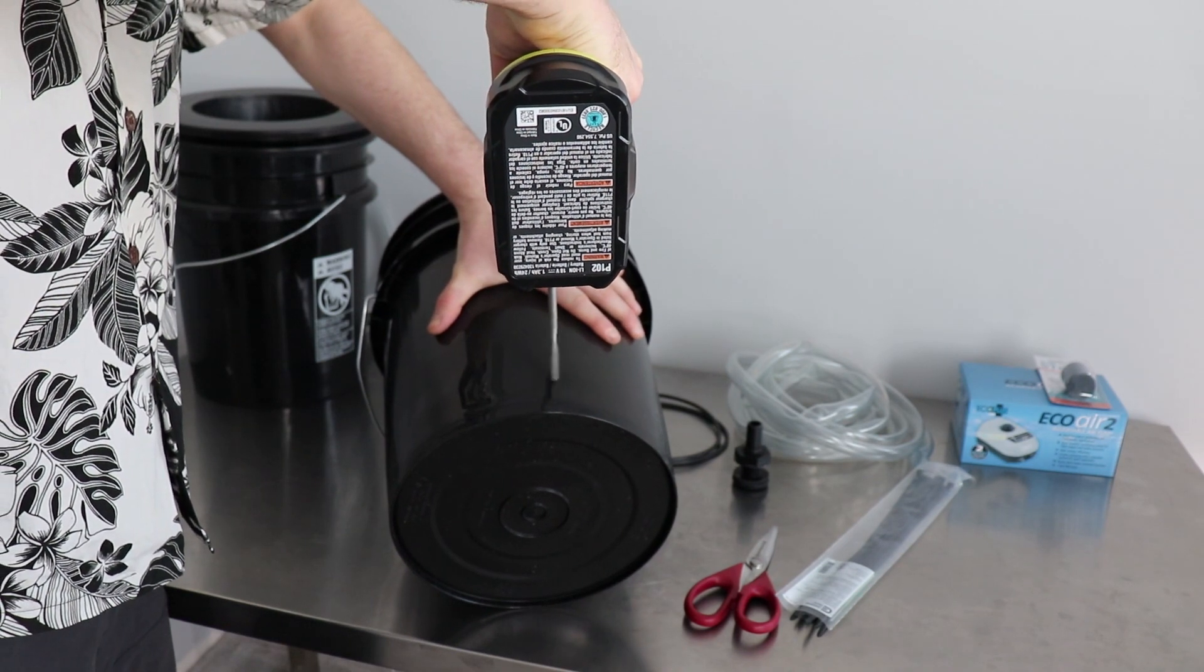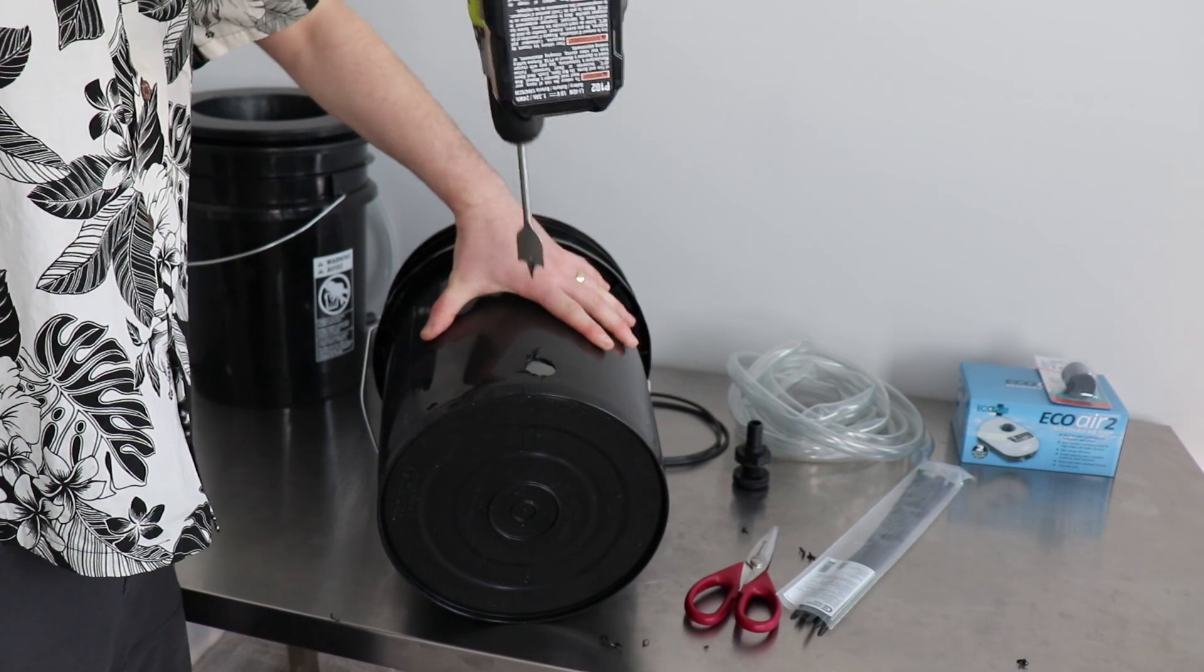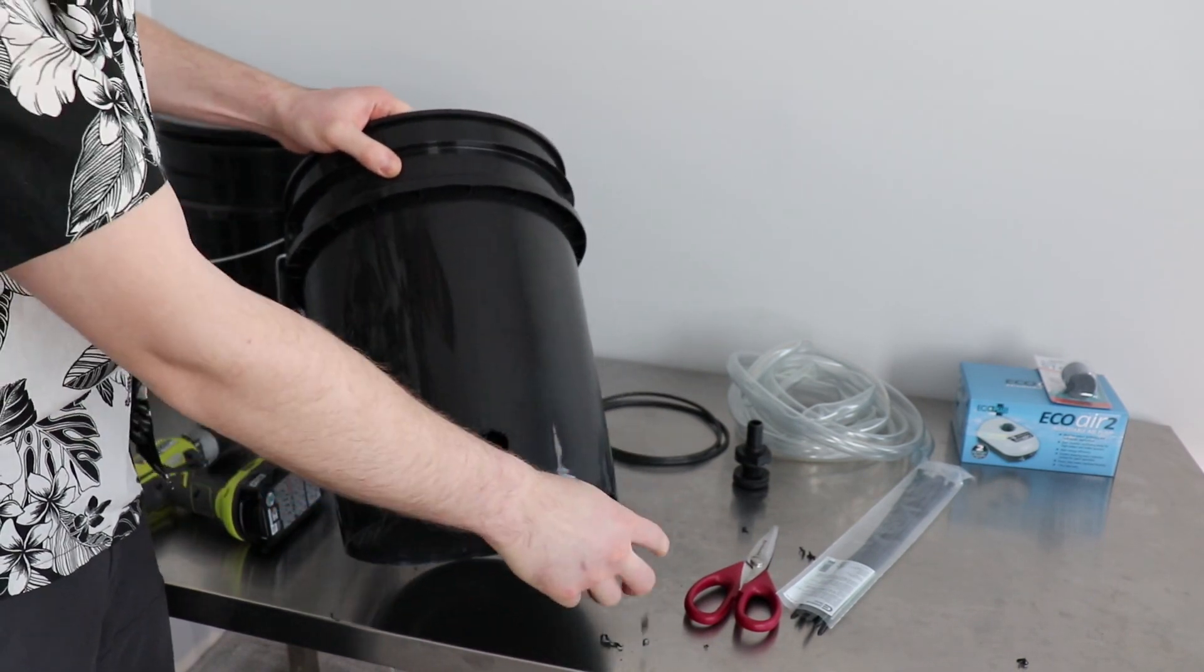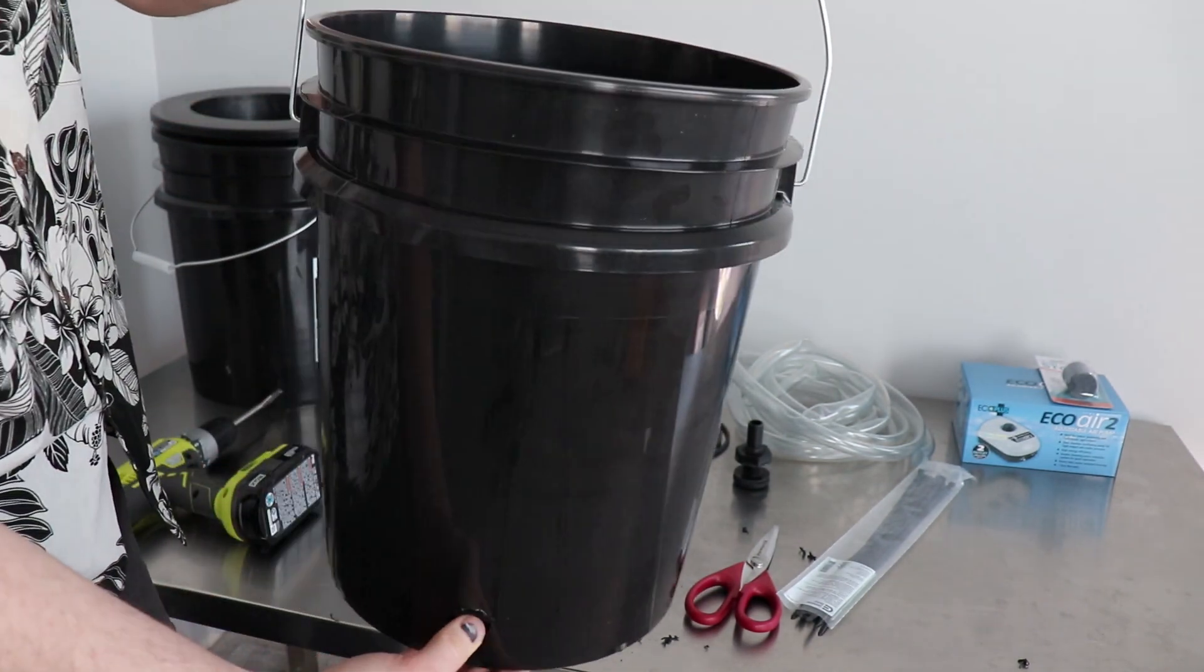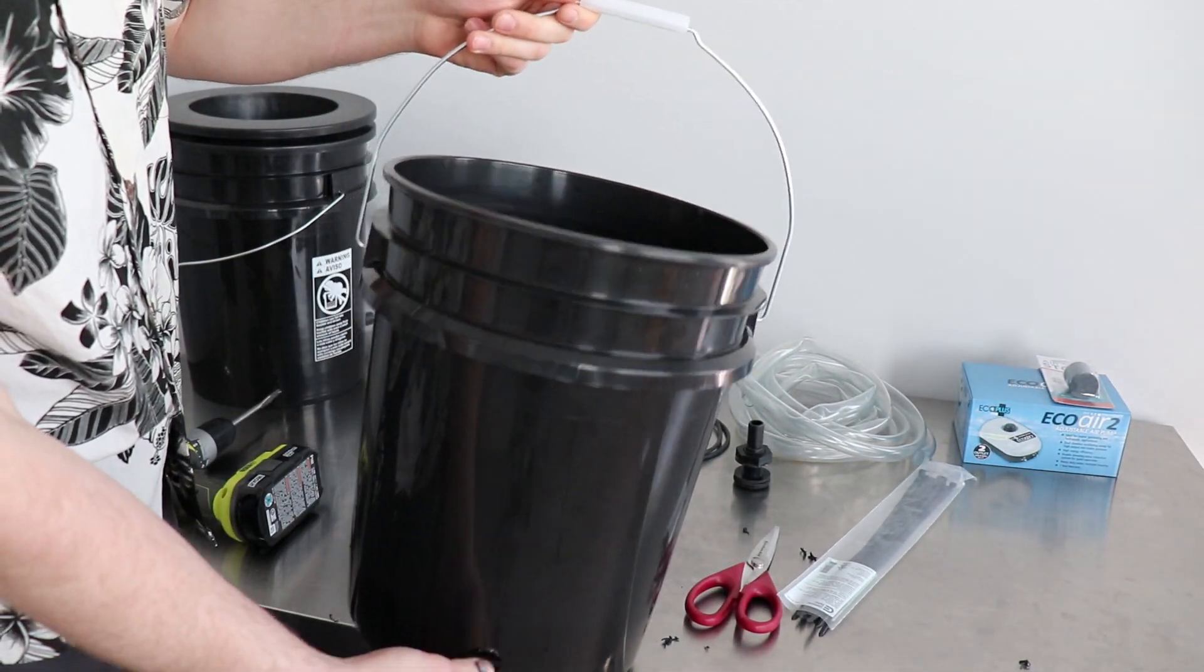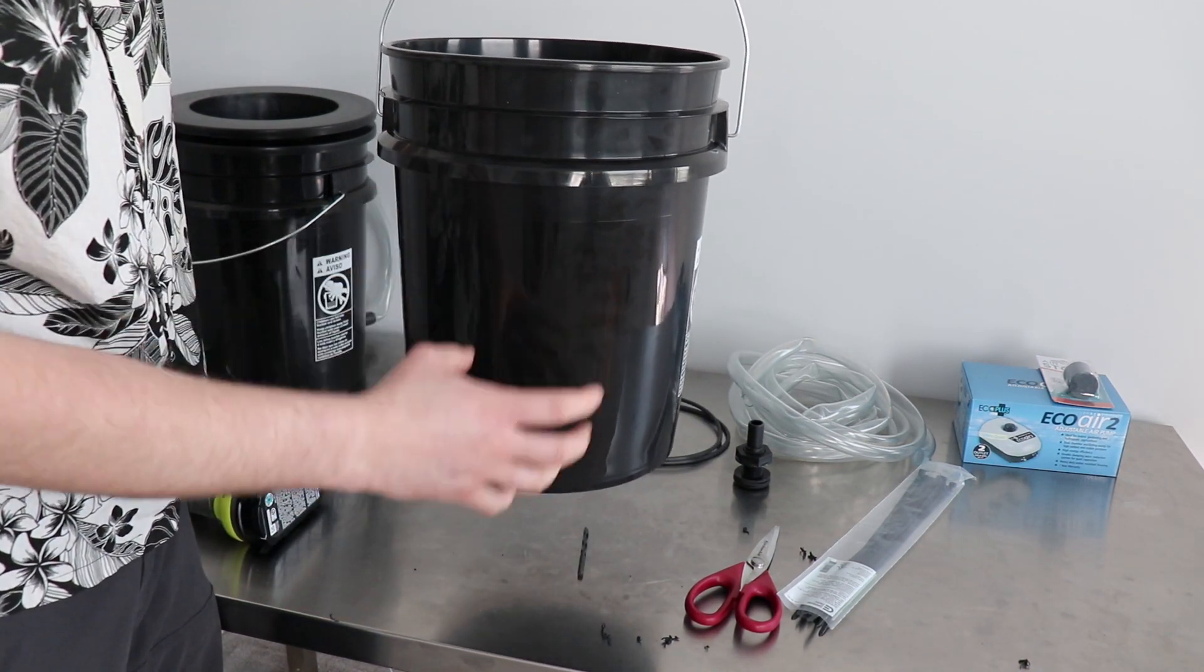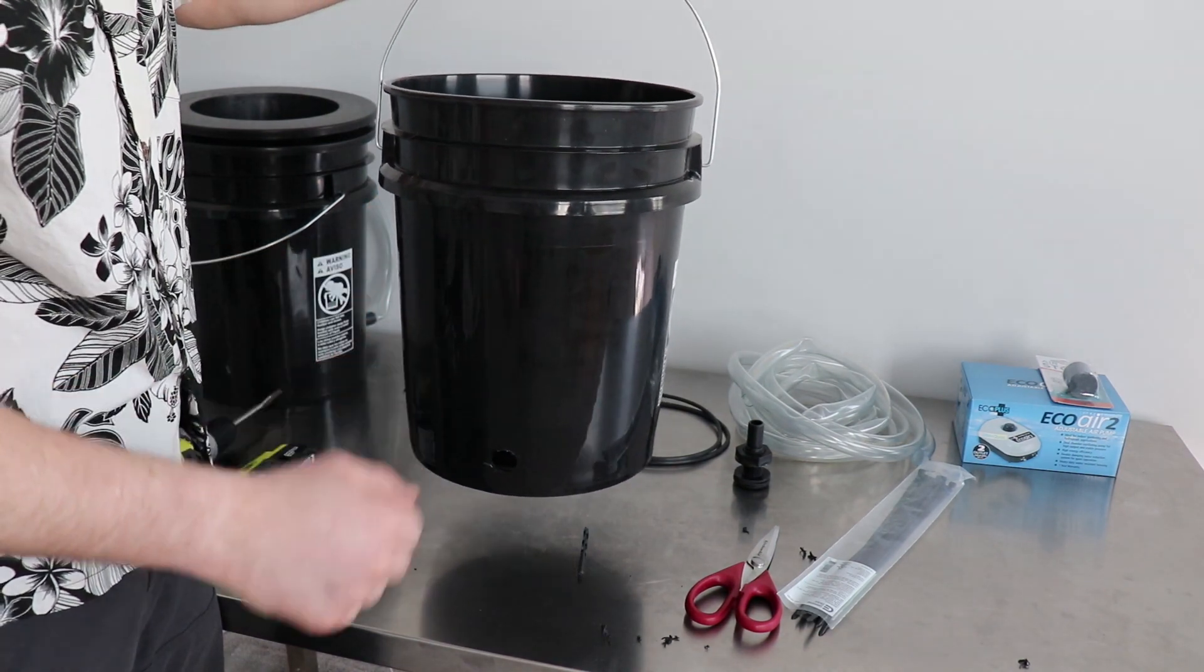And just drill your hole, you can put the hole wherever. I like to put the handles like this, put the hole here, that way I can lift my bucket. The water level indicator is going to be right here, it's good to go.